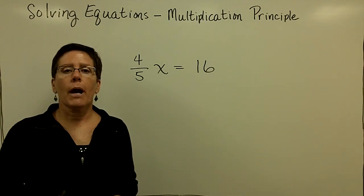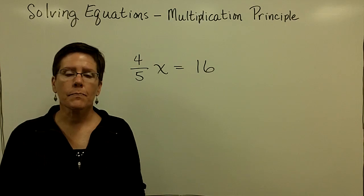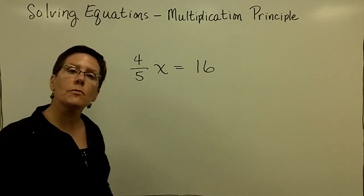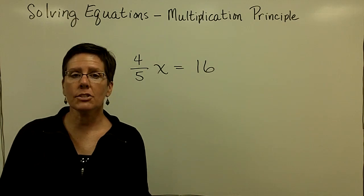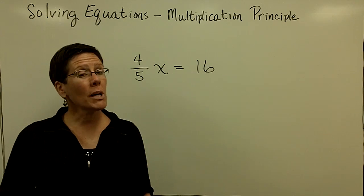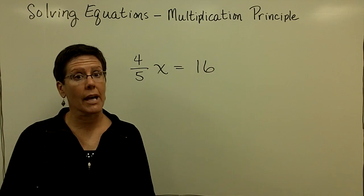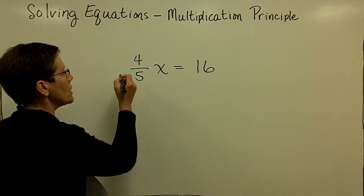I have been saying to you in the last couple of problems, divide both sides by whatever the coefficient of x is. The coefficient of x in this problem is 4 fifths. So I could say to you that let's divide both sides by 4 fifths. But it would be much easier if I just said to you, let's instead multiply both sides by 5 fourths, the reciprocal.